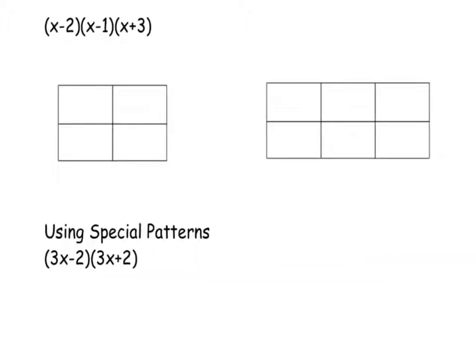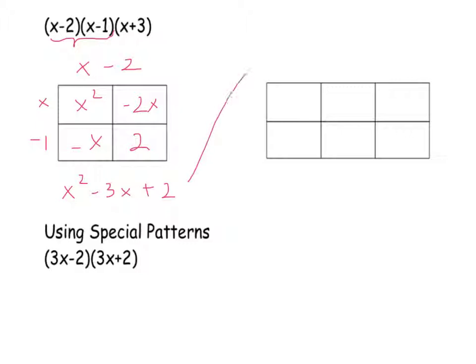In the next problem we are going to do 2 steps since we have to multiply 3 binomials. First we do x minus 2 times x minus 1 and get x squared minus 2x minus x plus 2, which gives us x squared minus 3x plus 2. That answer goes in the top row of our area model.